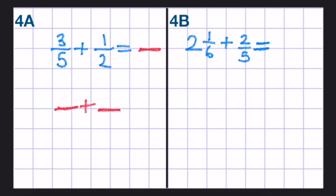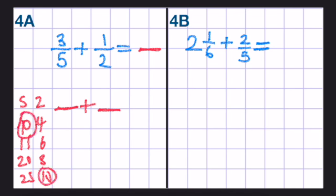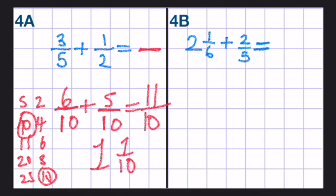So 3 fifths and 1 half. I know that 5, 10, 15, 20, 25 and 2, 4, 6, 8, 10. 10 is a common multiple of both 5 and 2. So we're going to put 10 here and 10 here. 5 times 2 is 10. So we do 3 times 2 is 6. 2 times 5 is 10. So we do 1 times 5, which is 5. 10 stays the same. So we've got 11 tenths. 1 and 1 tenth is a mixed number in its simplest form.